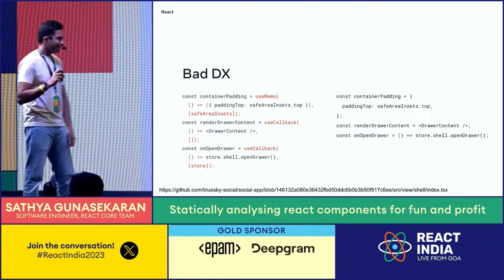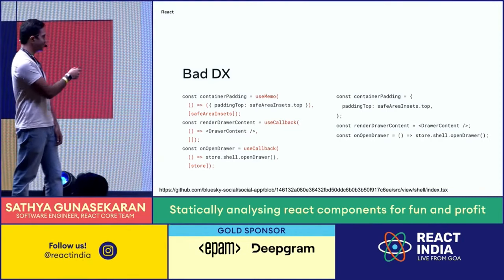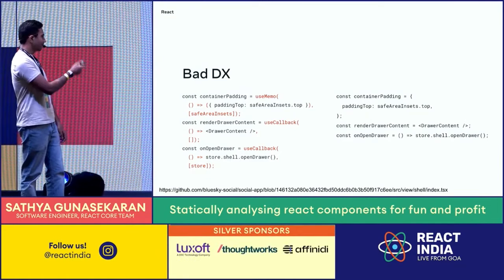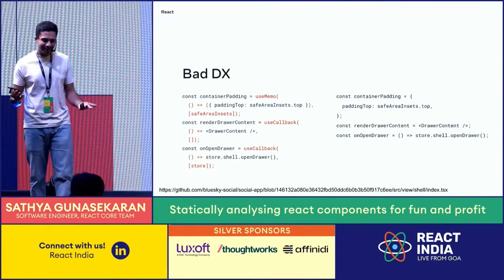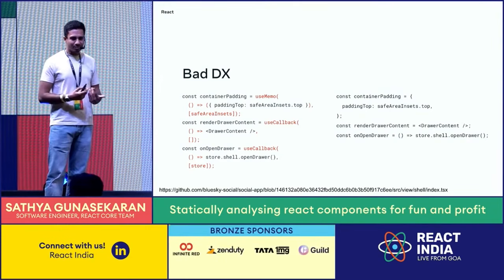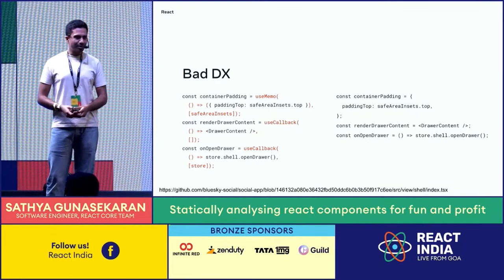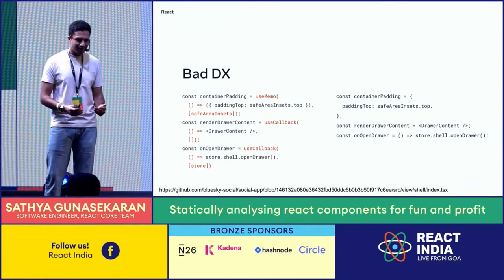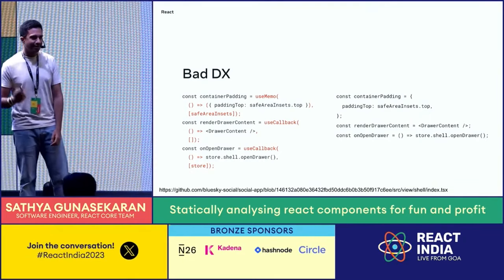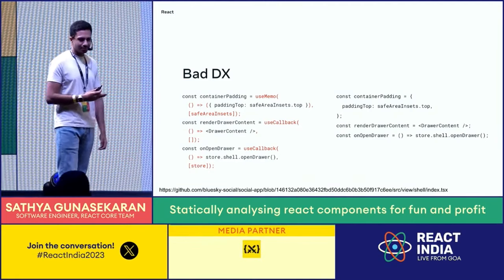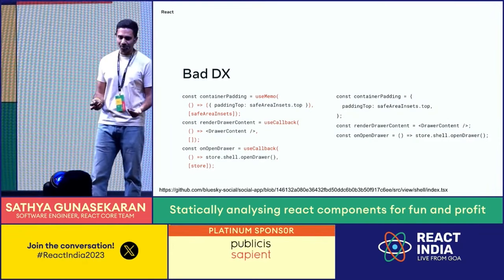Well, yes and no — because now we have good performance, but terrible DX. Check out this piece of code from the BlueSky app. We're using useCallback and useMemo left and right, like we're spinning plates. But we're UI developers — we want to focus on the UI, not solve the memoization puzzle. You're not building a data flow graph; you're describing the UI. This is exactly why React exists. So we thought on the React team: why not let the compiler handle the memoization? Imagine a world where you can just forget about useMemo, useCallback, and React.memo.